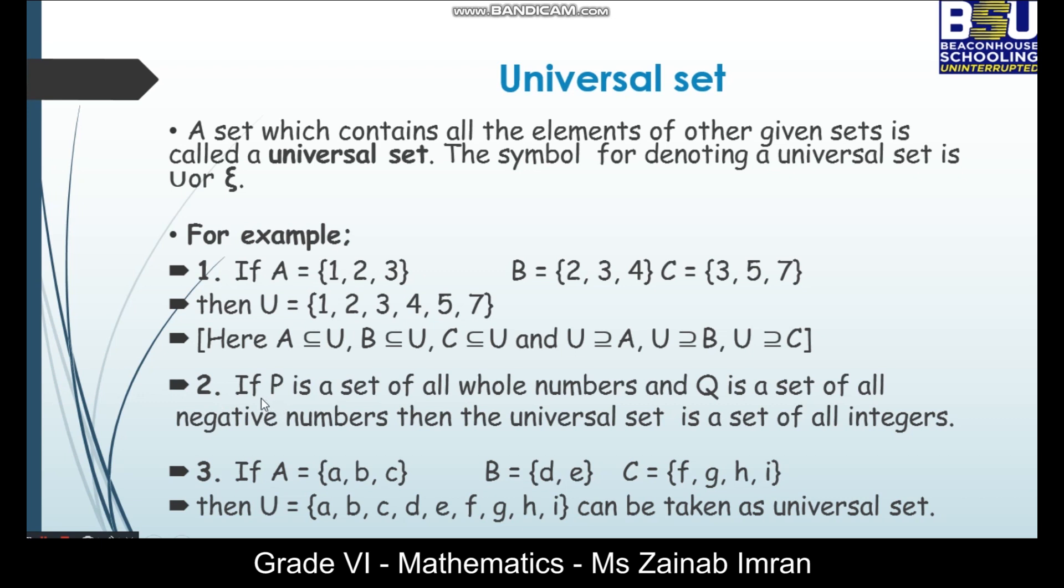Let's have another example. If P is a set of all whole numbers and Q is a set of all negative numbers, then the universal set is a set of all integers.